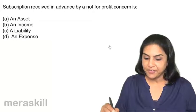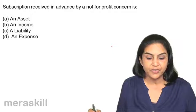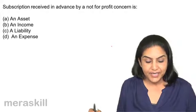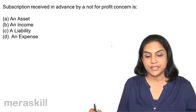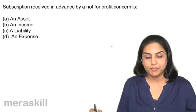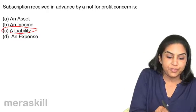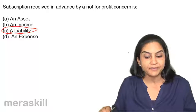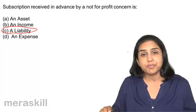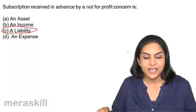Subscription received in advance by a not-for-profit concern is: A. an asset, B. an income, C. a liability, D. an expense. Subscription received in advance is a liability. Subscription which is earned but not received is an asset. So the correct answer is C — subscription received in advance is a liability.